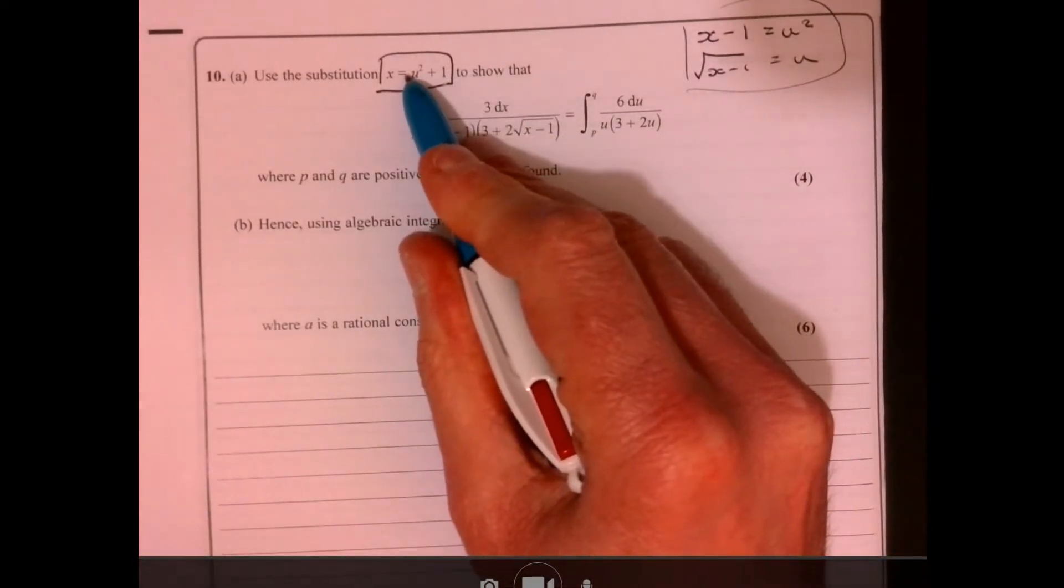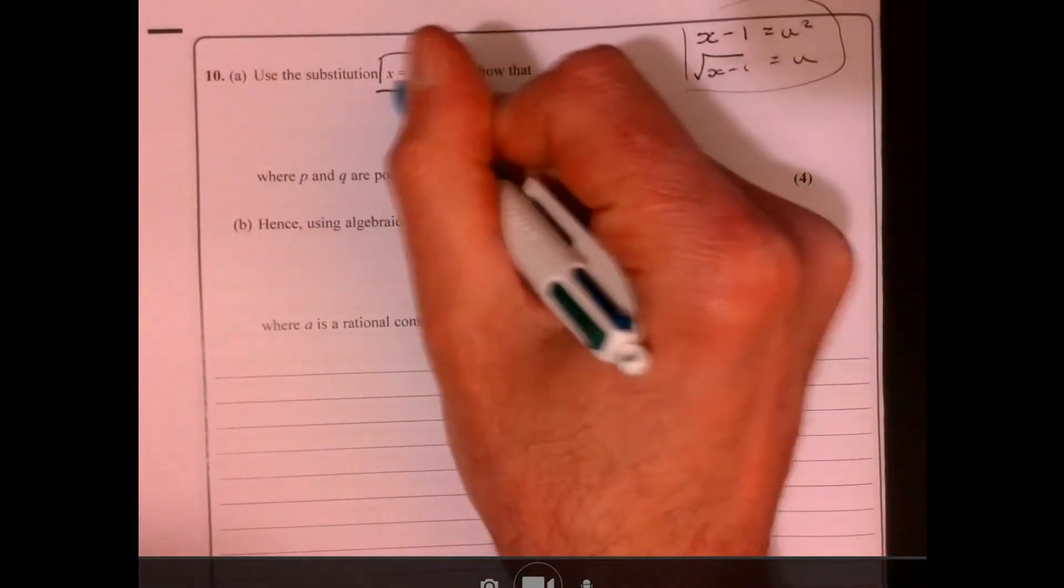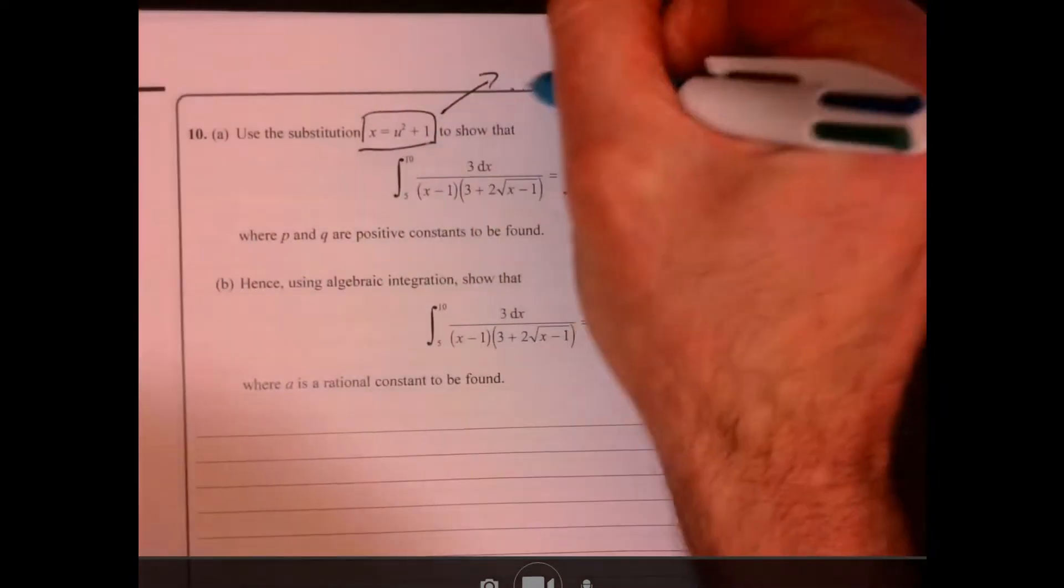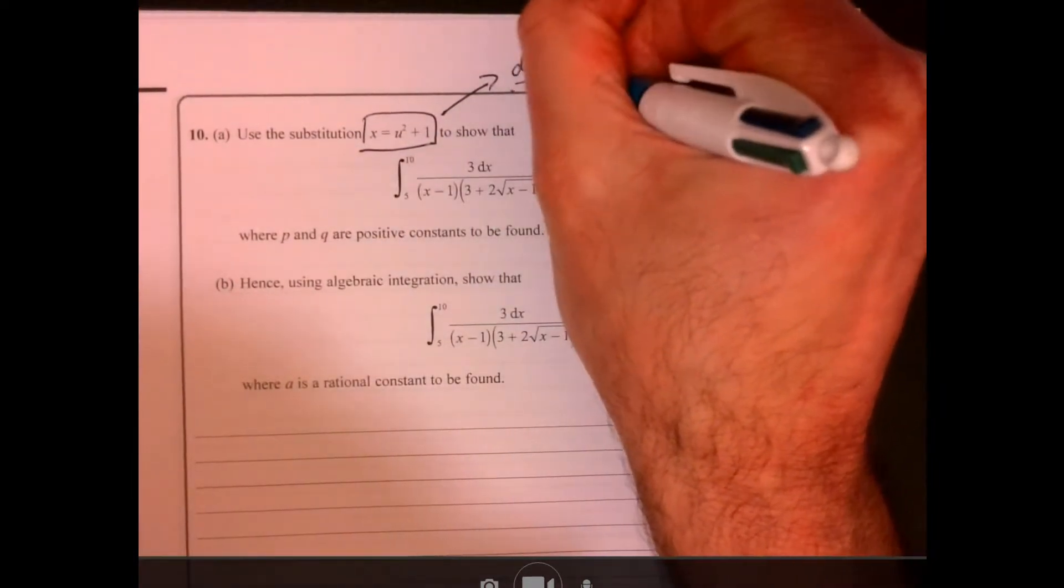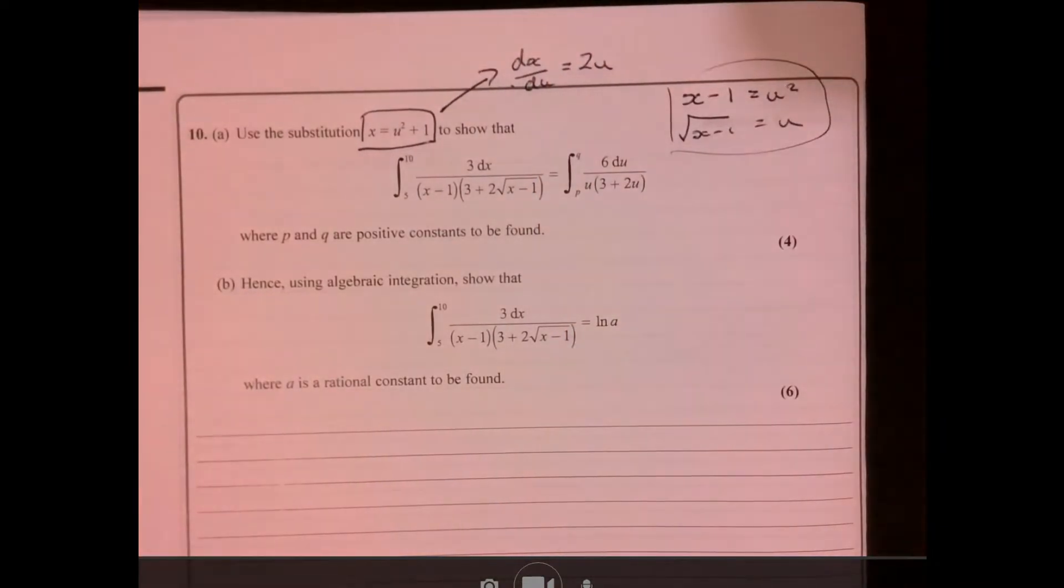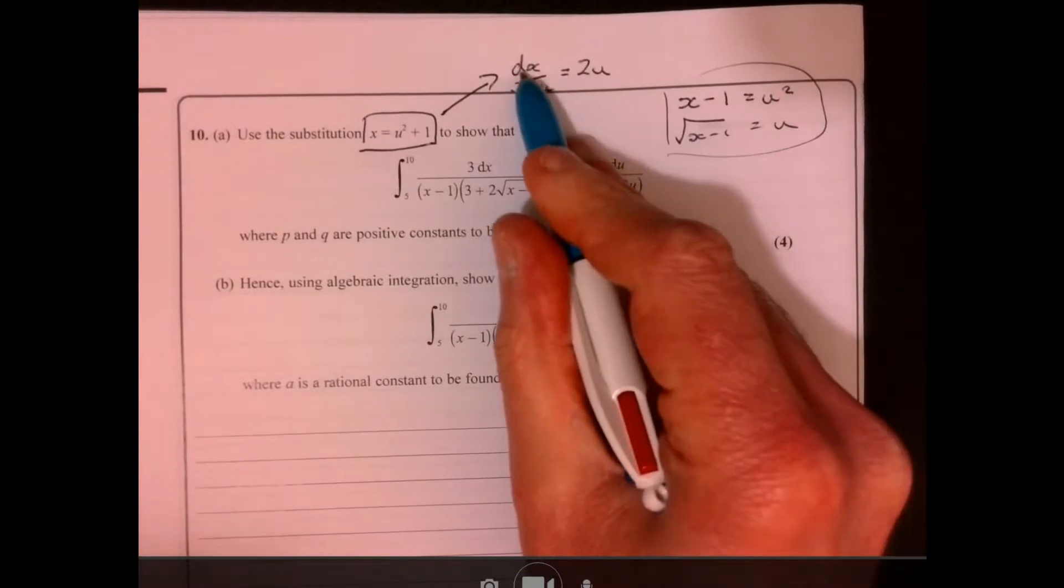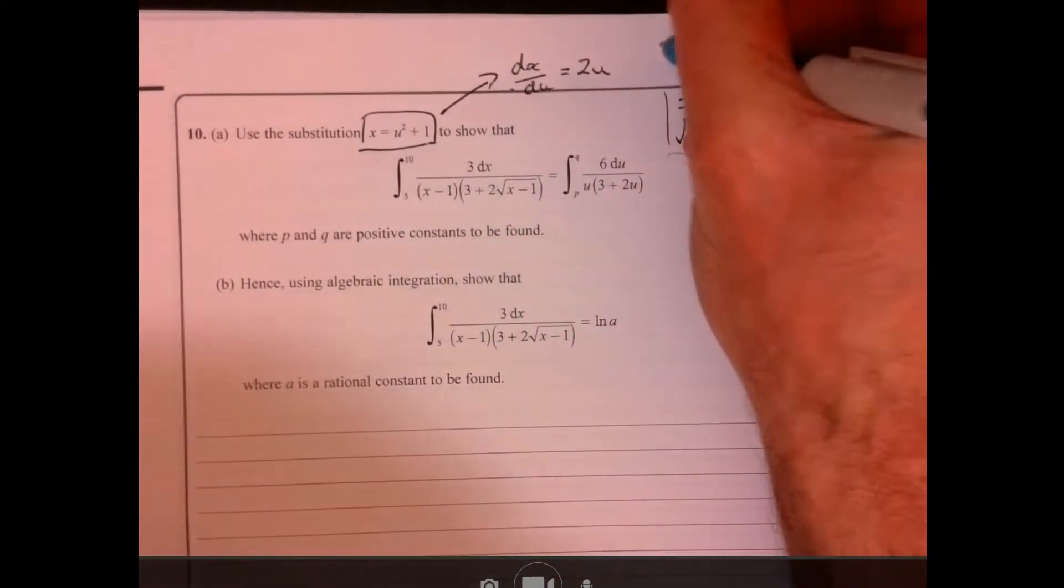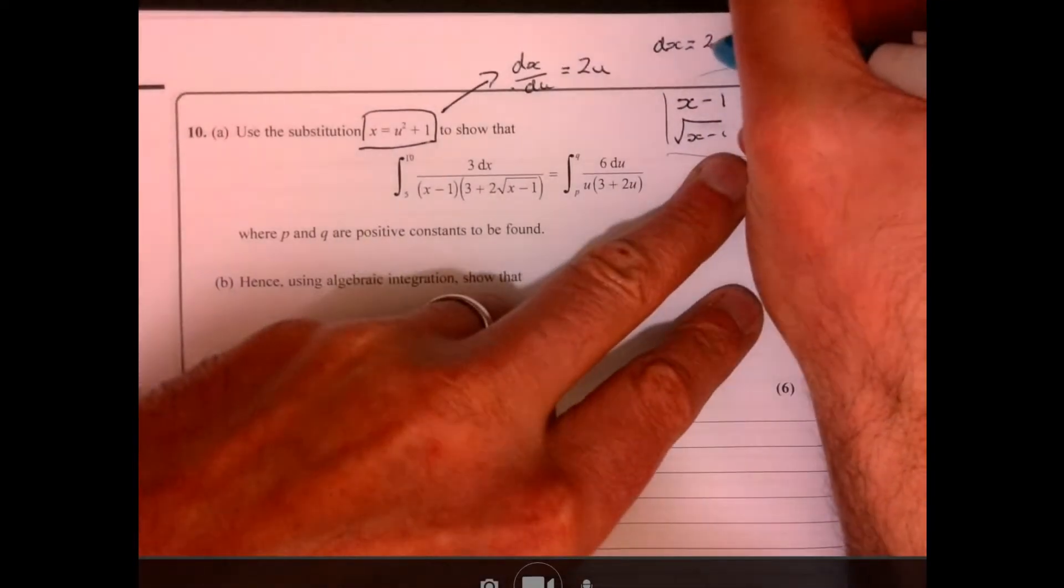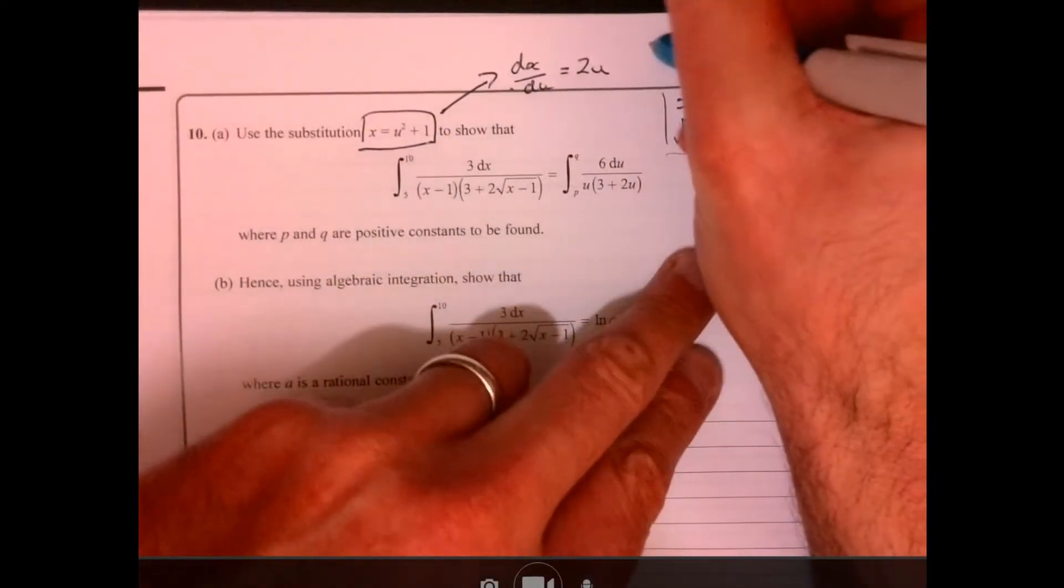Let's quickly work with this over here. So if we know this, therefore, we know that dx over du is equal to 2u. And then, so dx must equal 2u du.